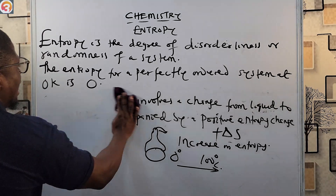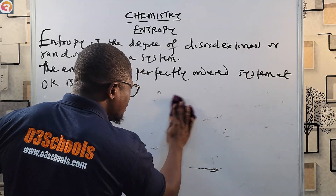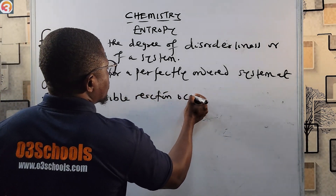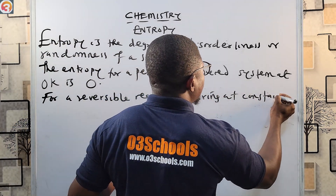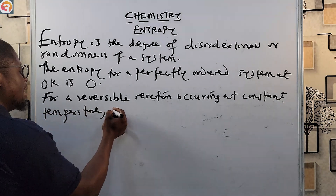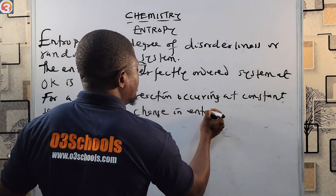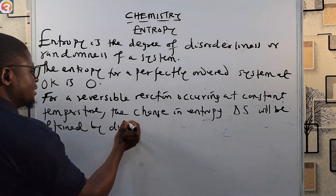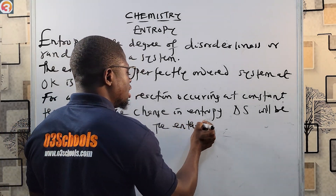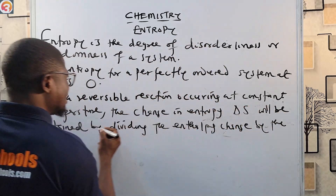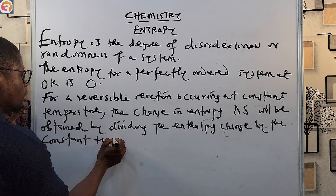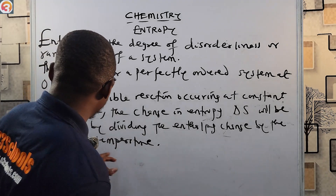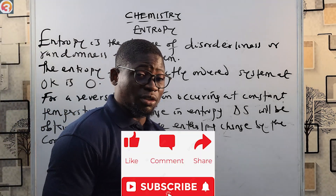For a reversible reaction occurring at constant temperature, the change in entropy — delta S — can be obtained by dividing the enthalpy change by the constant temperature. That is: ΔS = ΔH / T.